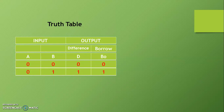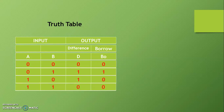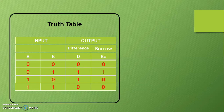Second condition 01: difference is 1 and borrow is also 1. Third condition 10: difference is 1 and borrow is 0. Last condition 11: difference is 0 and borrow is also 0. So this is the output table for the half subtractor.